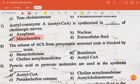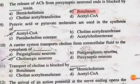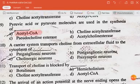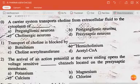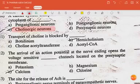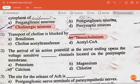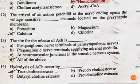The next question: the release of acetylcholine from the presynaptic neuronal end is blocked by botulinum toxin. Pyruvic acid or pyruvate molecules are used in the synthesis of acetylcholine. A carrier system transports choline from extracellular fluid to the cytoplasm of cholinergic neurons, and this transport of choline is blocked by hemicholinium.